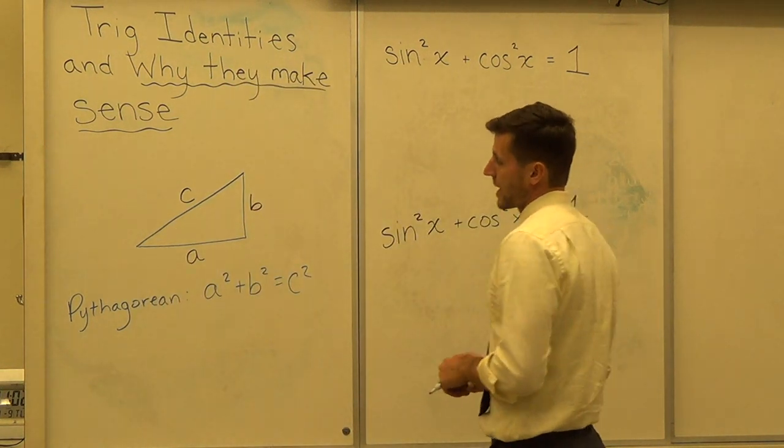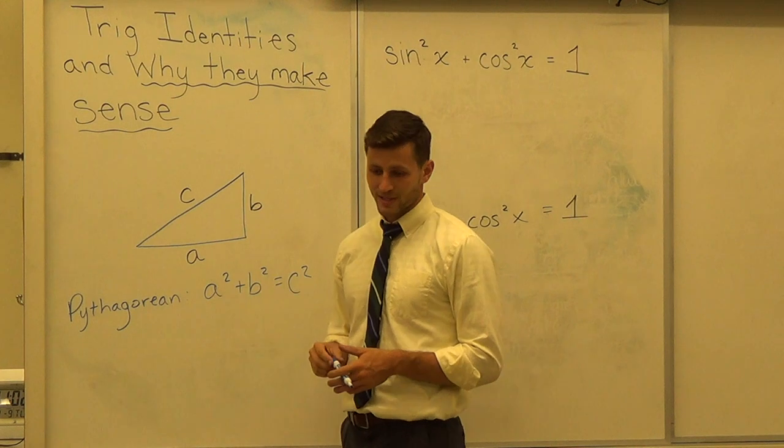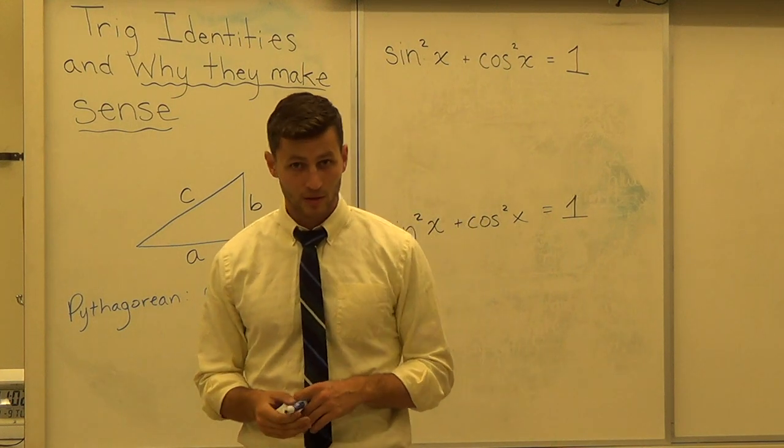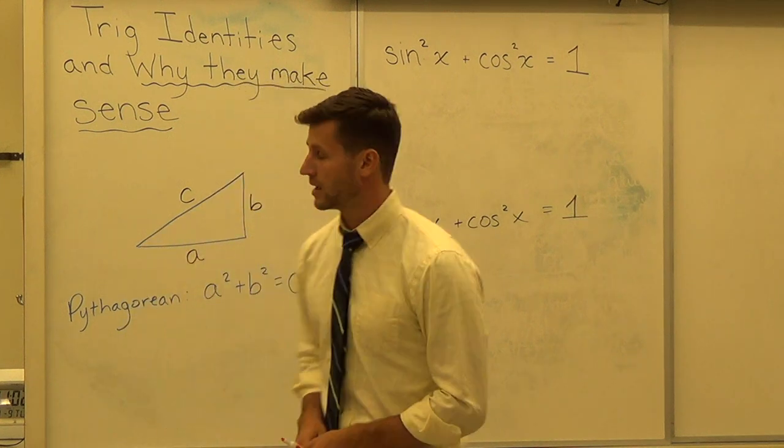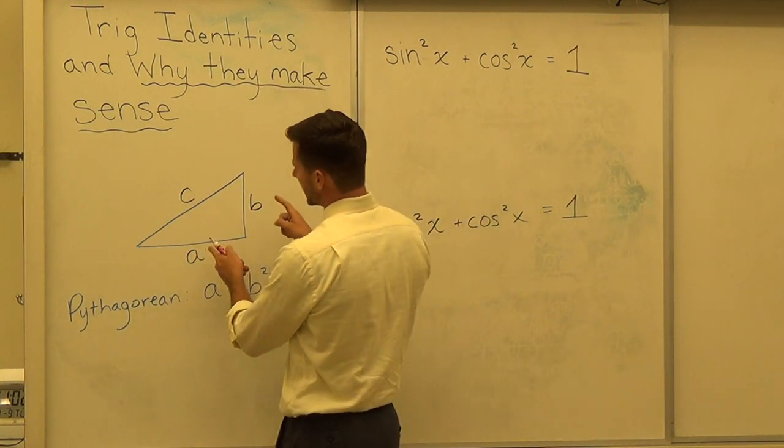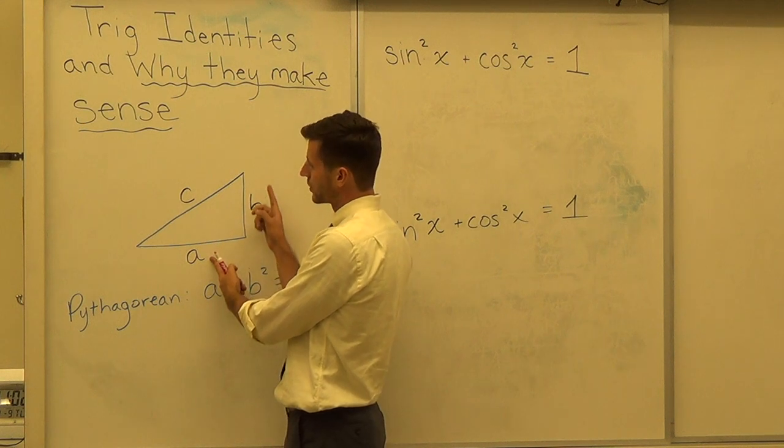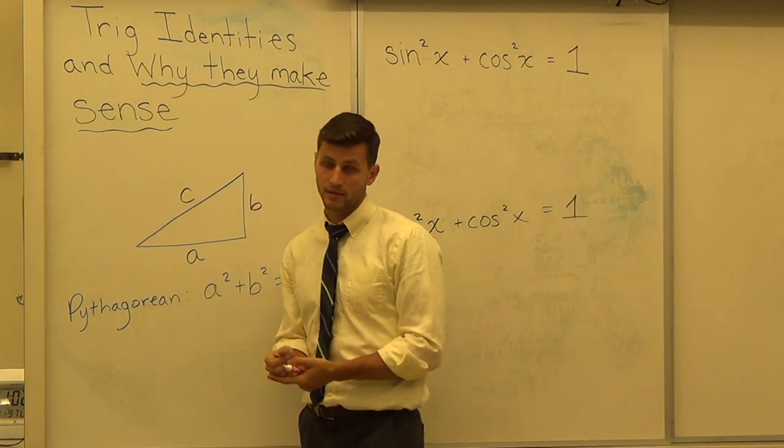So I'm going to bring it back to the Pythagorean Theorem. One of those things that almost everybody who has learned it remembers because it's so simple to remember. A squared plus B squared equals C squared. So the squares of the two legs of a triangle are equal to the square of the hypotenuse.